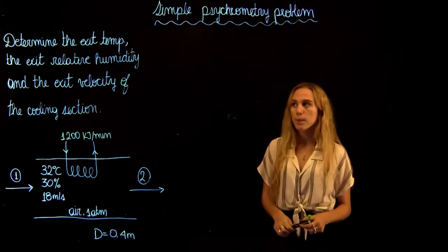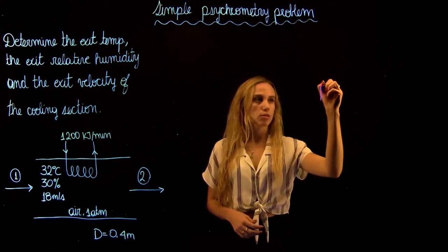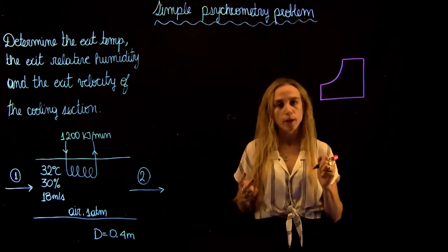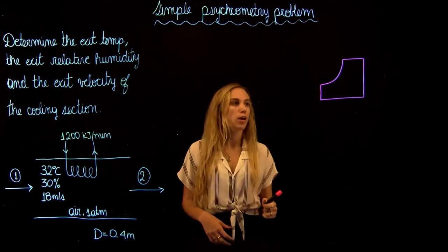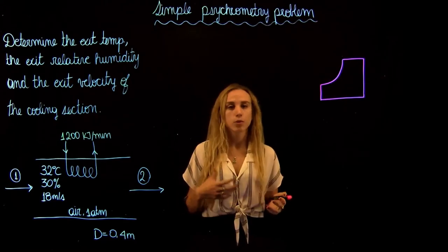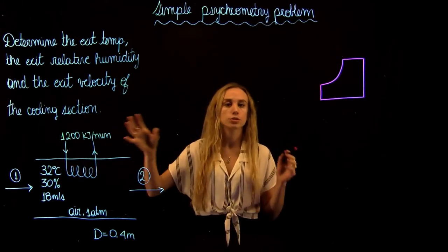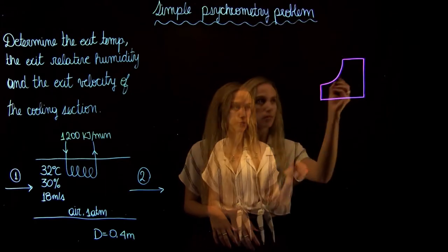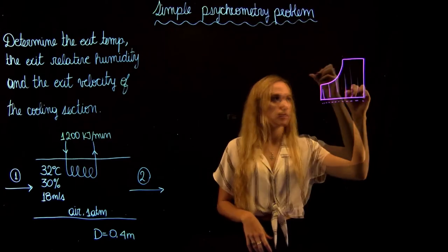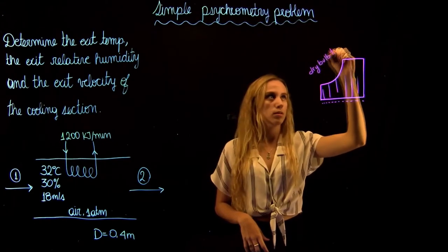Before jumping to the problem, let's review the psychrometric chart. This chart is a very useful tool because by having two parameters, we can find a lot of data. Starting with the dry bulb temperature — it's the temperature measured by standard thermometers. When a problem states a temperature of 32 degrees Celsius, that's the dry bulb temperature. On the chart, its values appear along a straight vertical line.